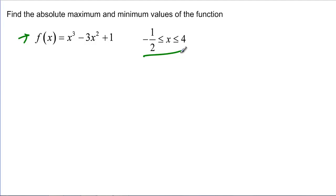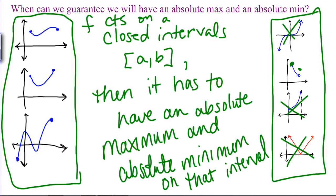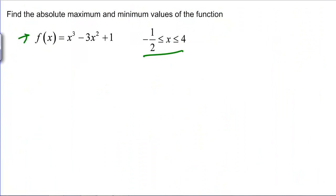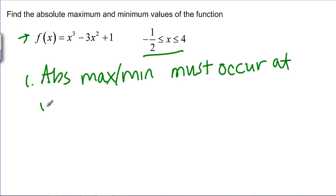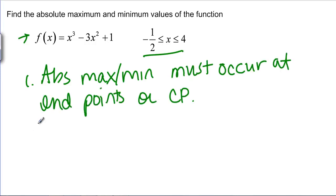How do we find them? If we look back at our examples, the absolute minimums and maximums either occur at the endpoints or in the middle at local maxes and mins. This should make really good sense — the only way you can be the biggest is if you're at the endpoints or you're the biggest nearby. Step one: the absolute max and min must occur at endpoints or critical points, so we're going to find them.